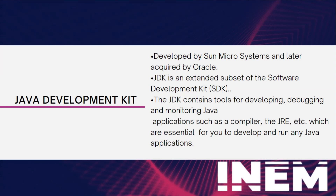The JDK, or Java Development Kit, is a powerful toolkit with a rich history — initially developed by Sun Microsystems and later acquired by Oracle. It's a pivotal component of Java development and an extended subset of the Software Development Kit, commonly known as the SDK. The JDK equips developers with a comprehensive set of tools necessary for creating, debugging, and monitoring Java applications, and it includes a robust compiler.